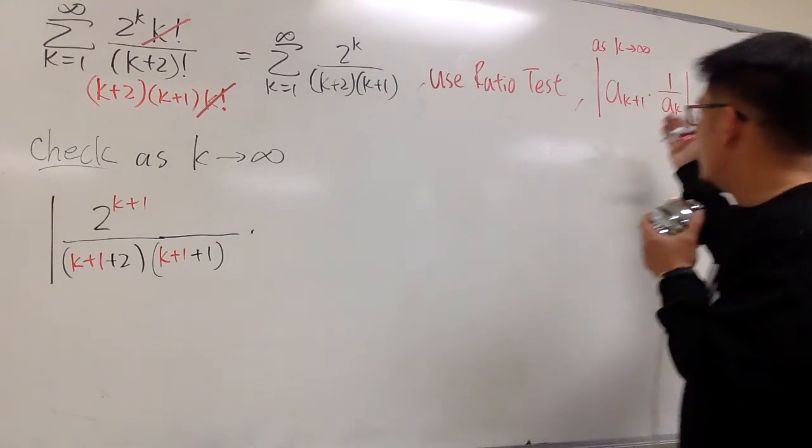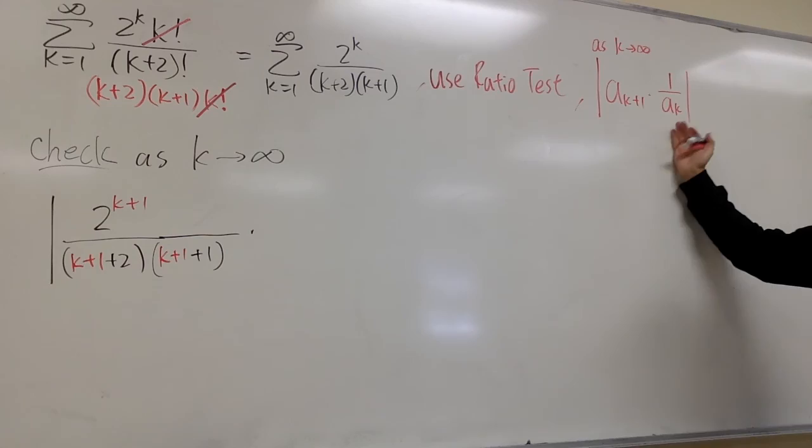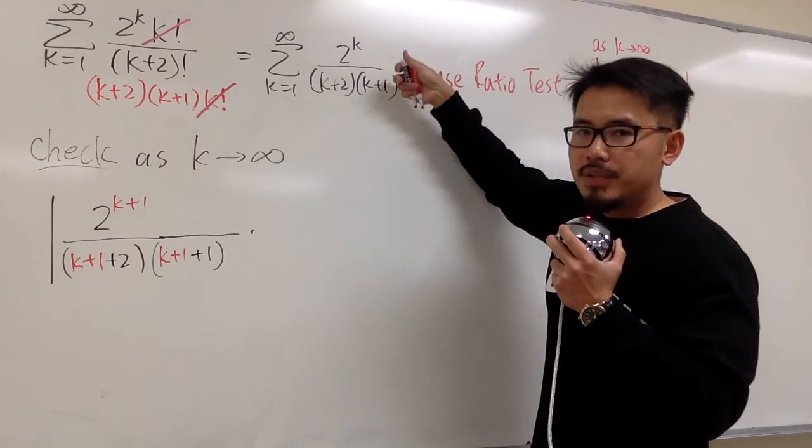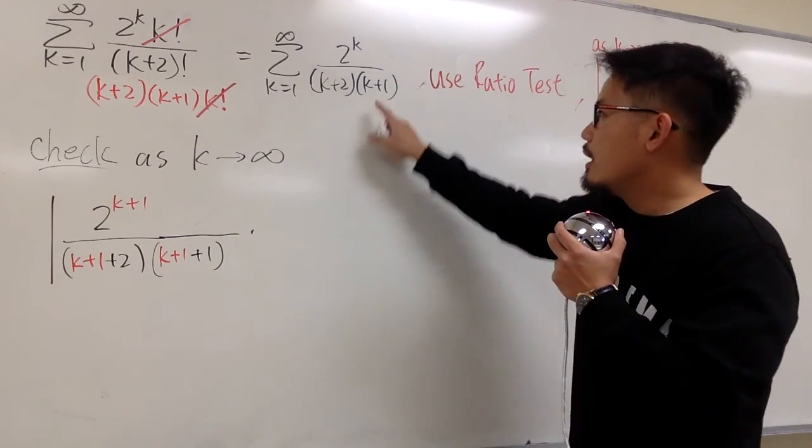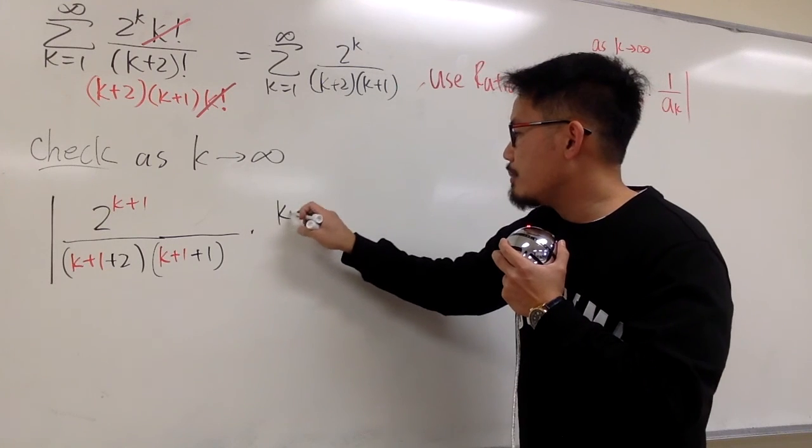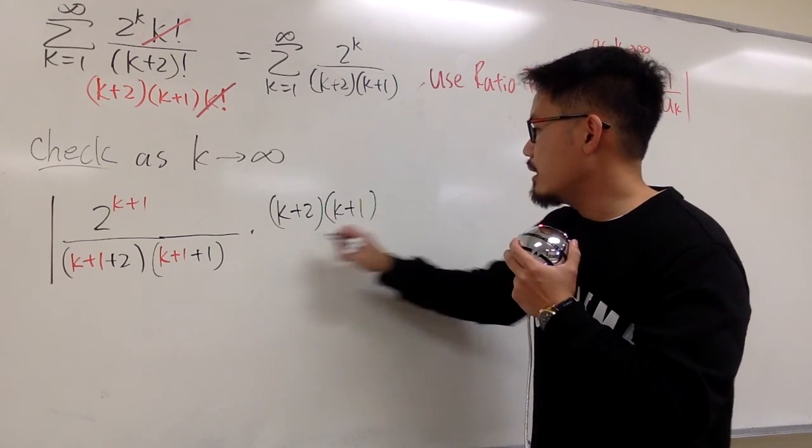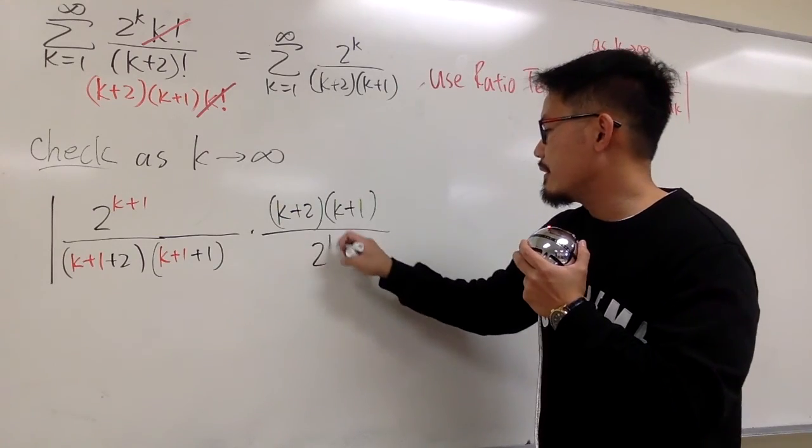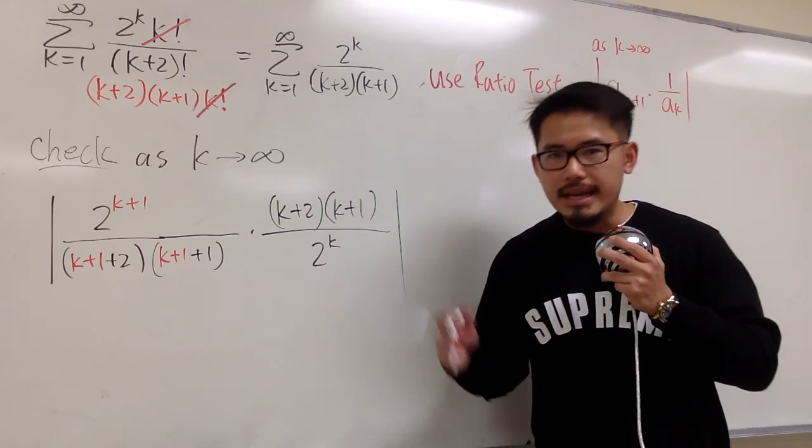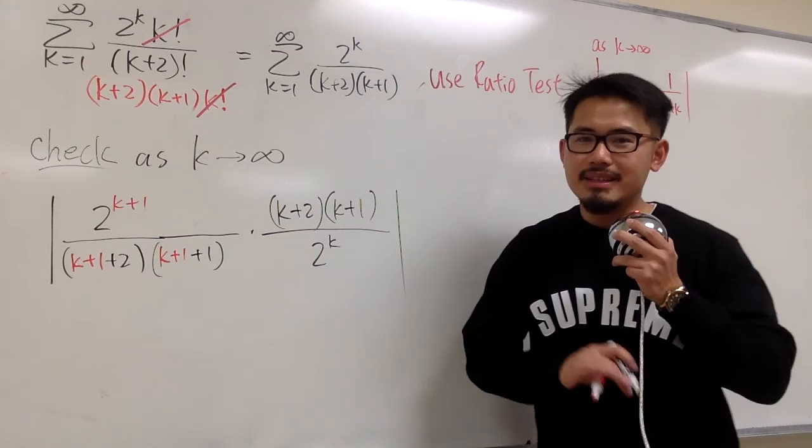But anyways, this is the expression for a_{k+1}. And then we multiply by the reciprocal of the original. So I will take this, flip it, and then put it here. I will just put down k plus 2 times k plus 1 over 2 to the k. And now we are about to have some fun, the cancellations.